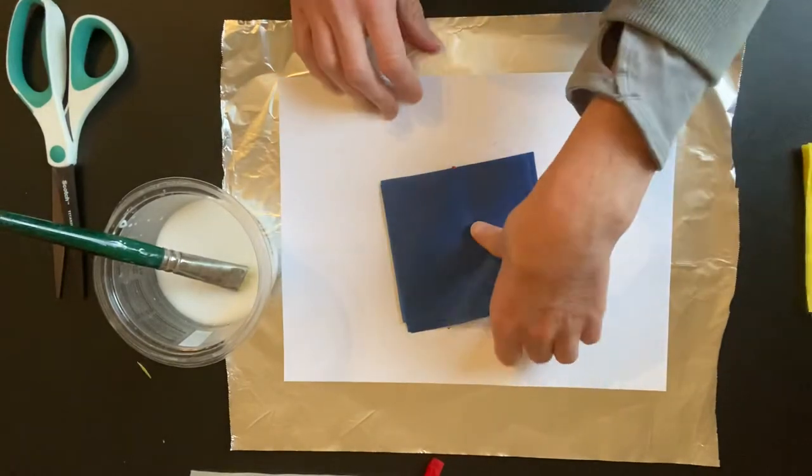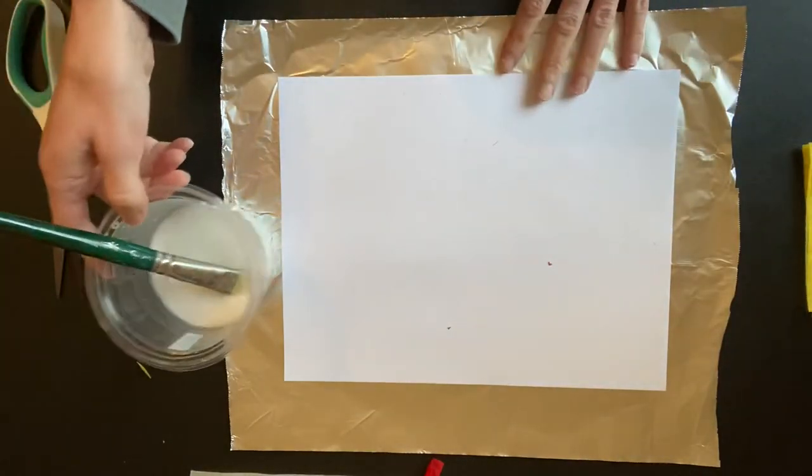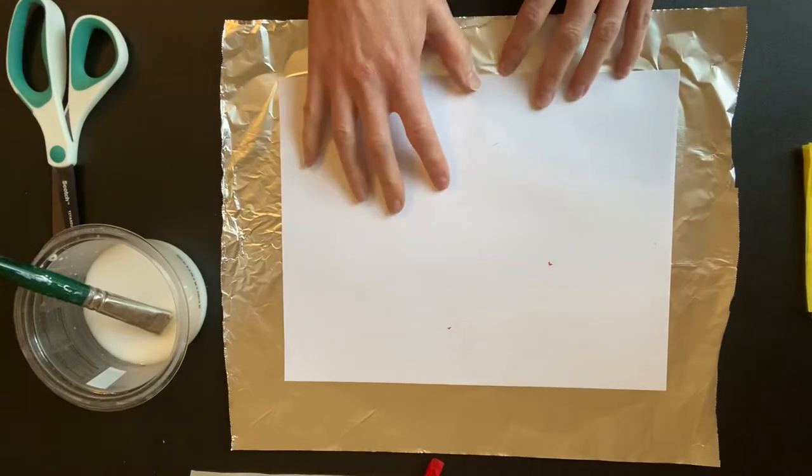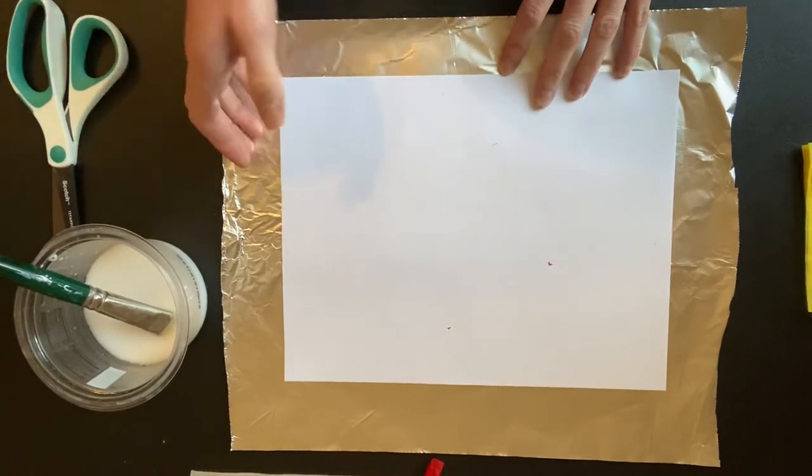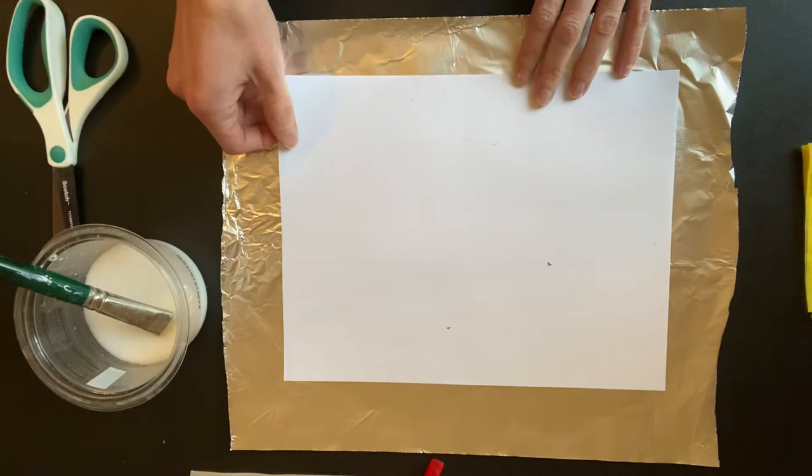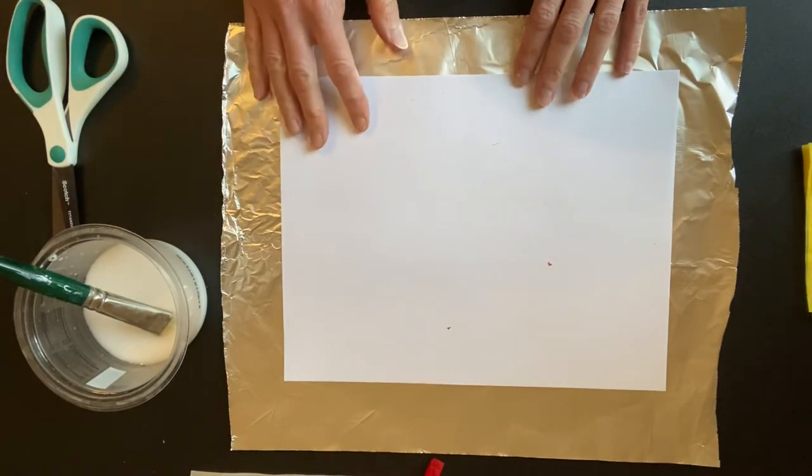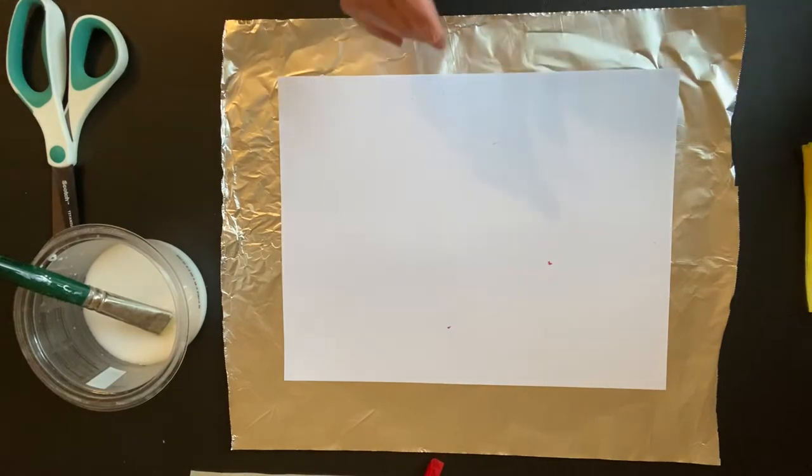So the first thing I'm going to do is get a piece of paper. It could be lined notebook paper, white paper, colored paper, doesn't matter. Anything you've got. It could even be cardboard from a cereal box. That works too.